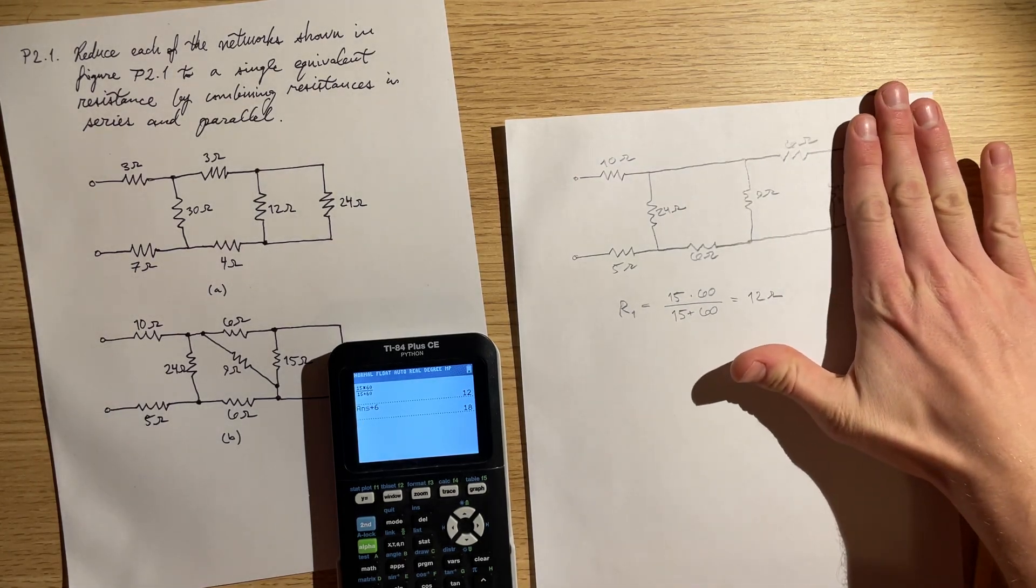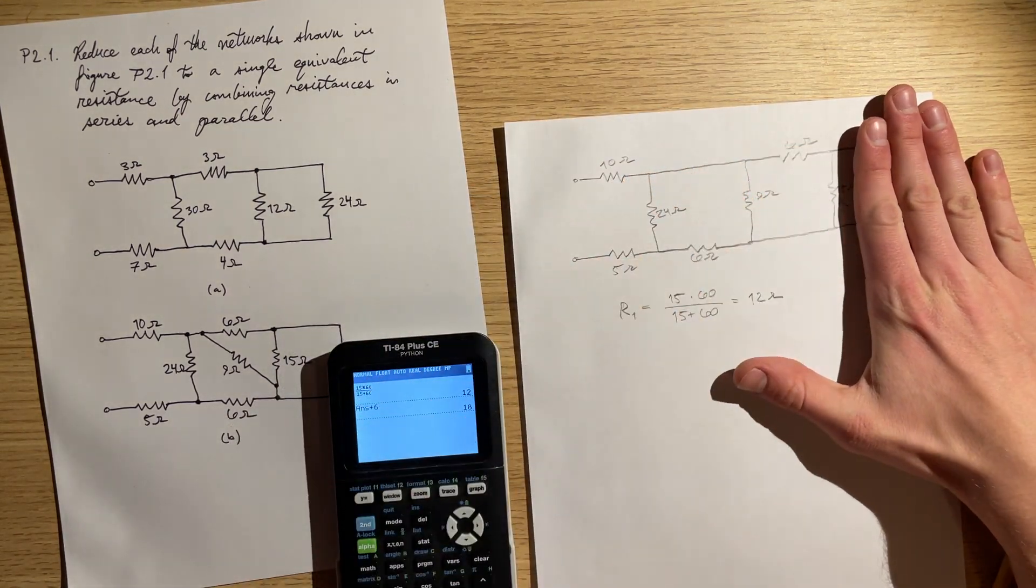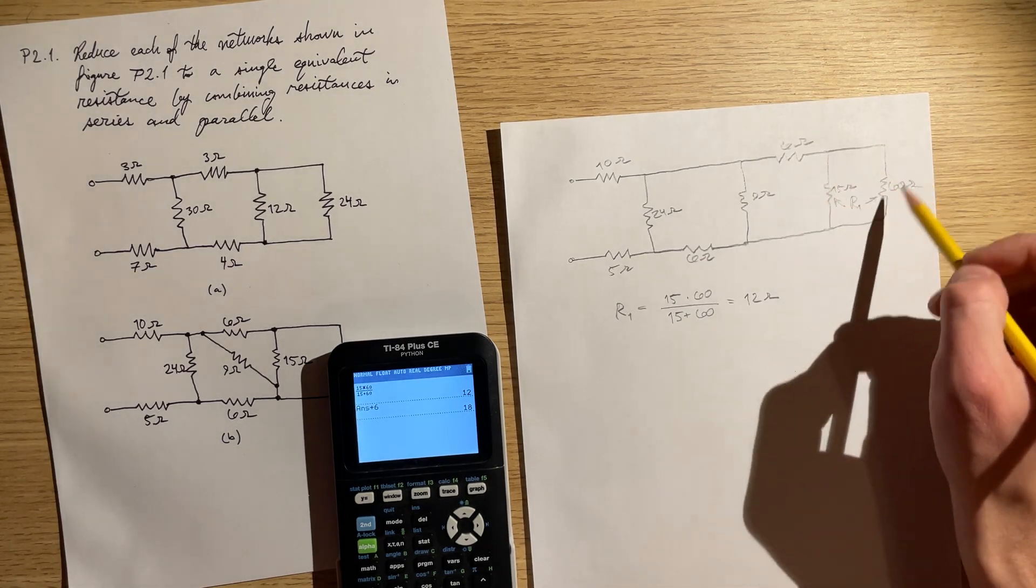If you can just imagine that being 12 ohms, that's what our circuit would look like. We can add these two now because we just simplified this into one resistance.